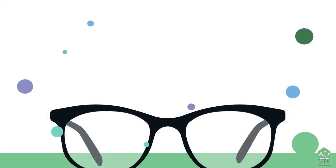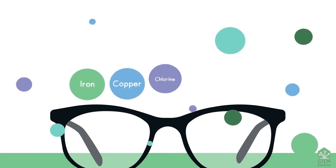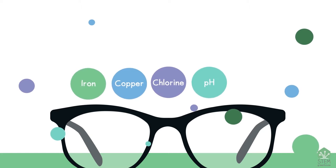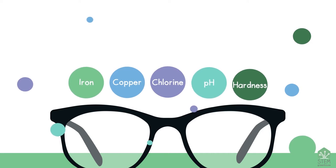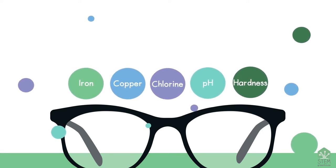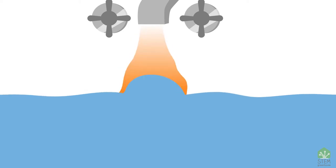Today we'll be testing for the following chemicals: iron, copper, chlorine, pH, and we will also test for water hardness, which means there is a lot of calcium and magnesium dissolved in the water. Iron is found naturally in most water, but too much iron can stain sinks and tubs because it turns orange when it reacts with oxygen and forms rust — just like a rusty car. You might have noticed orange spots in your tub or sink where the water has dripped over a long time.